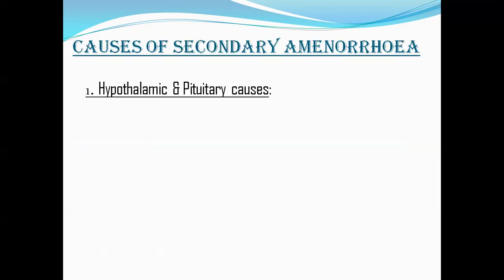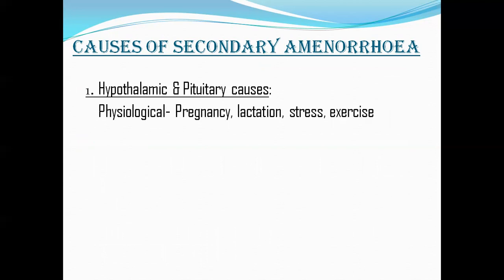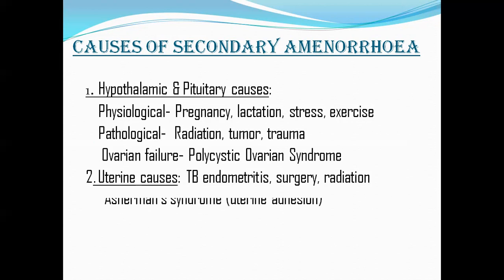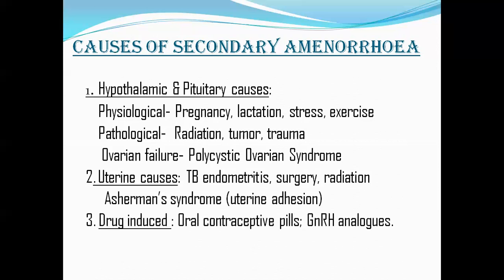Causes of secondary amenorrhea: physiological — pregnancy, lactation; pathological hypothalamic or pituitary causes — stress (inhibits the hypothalamic-pituitary axis), severe exercise in athletes (may delay menses), radiation, tumor, trauma; ovarian failure and PCOS; uterine causes — tuberculosis, endometriosis, surgery, radiation, Asherman's syndrome (intrauterine adhesions), where hormones are normal but no menses; and drug-induced causes — oral contraceptive pills containing estrogen or combination estrogen-progesterone suppress LH surge and ovulation, as do GnRH analogs.